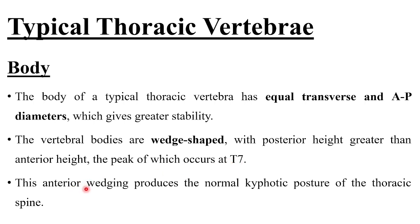This anterior wedging produces the normal kyphotic posture of the thoracic spine, with peak wedge shape occurring at T7.